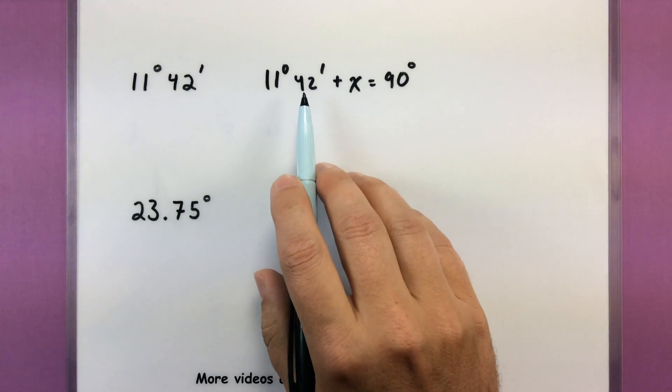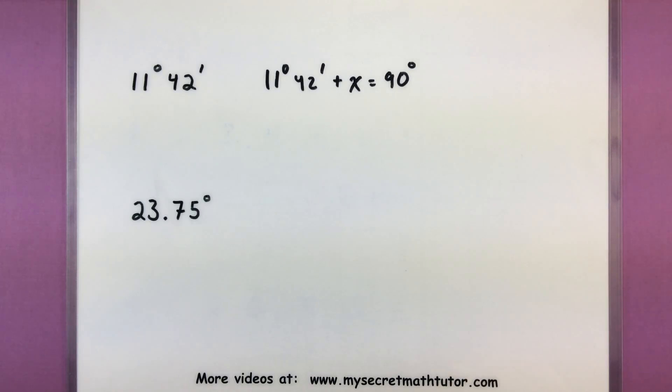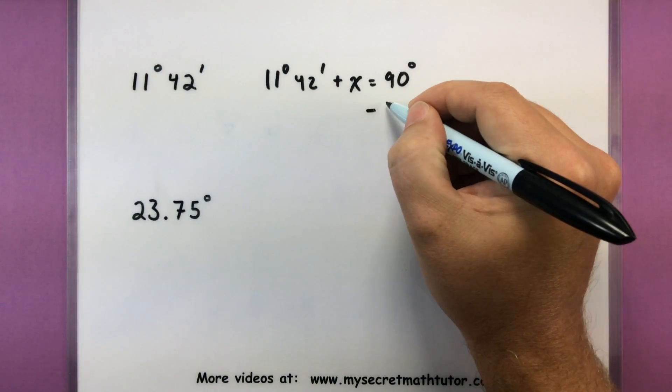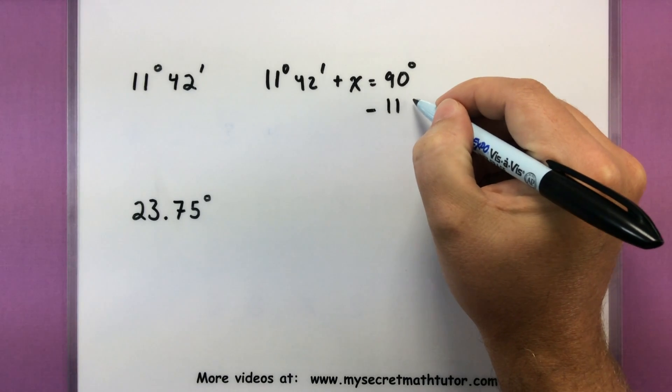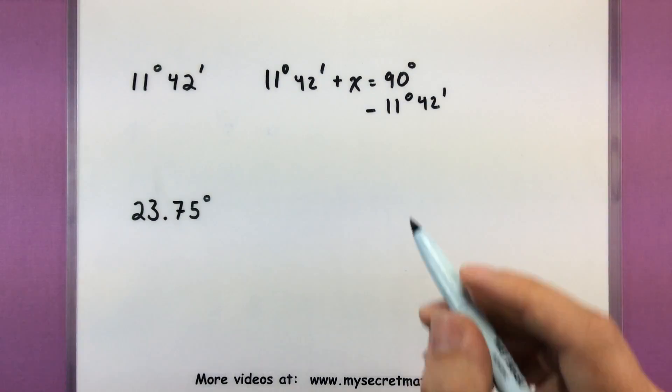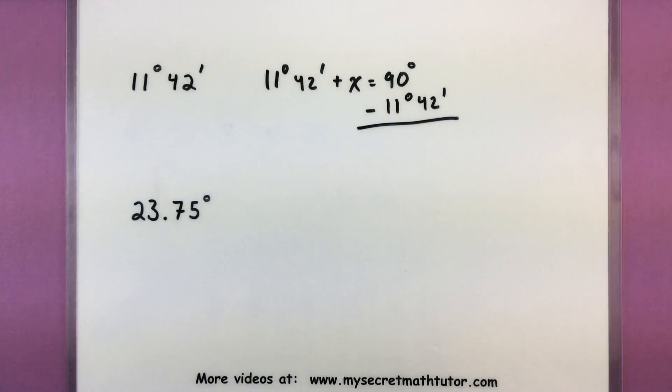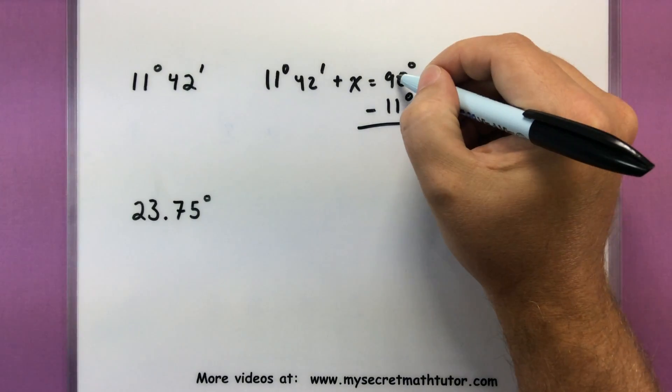So what I'm really thinking of in my head here is alright, I need to take 90, subtract 11 and 42 minutes. So subtract 11 degrees, 42 minutes. Now as I go to subtract this you'll notice that I don't have any minutes on that 90 degrees. No problem, we can go through a process of borrowing.